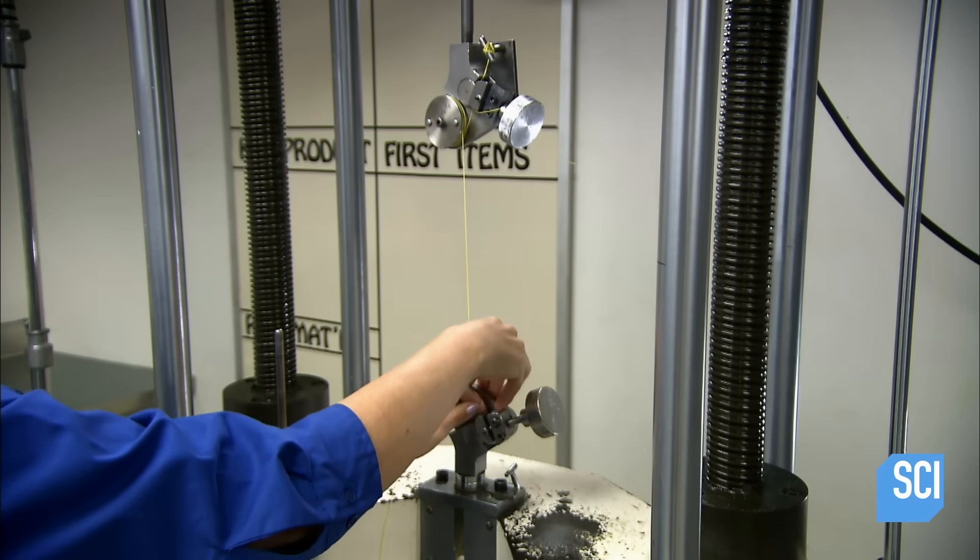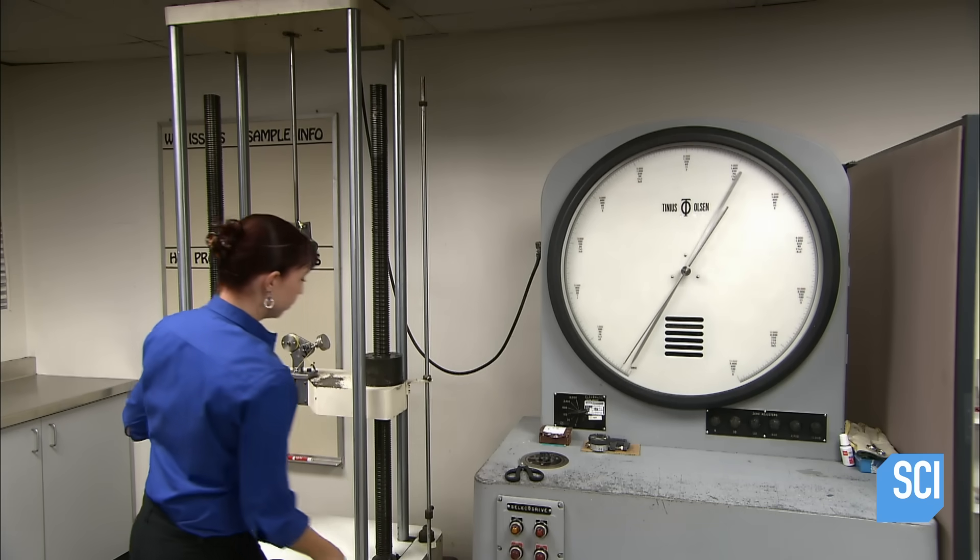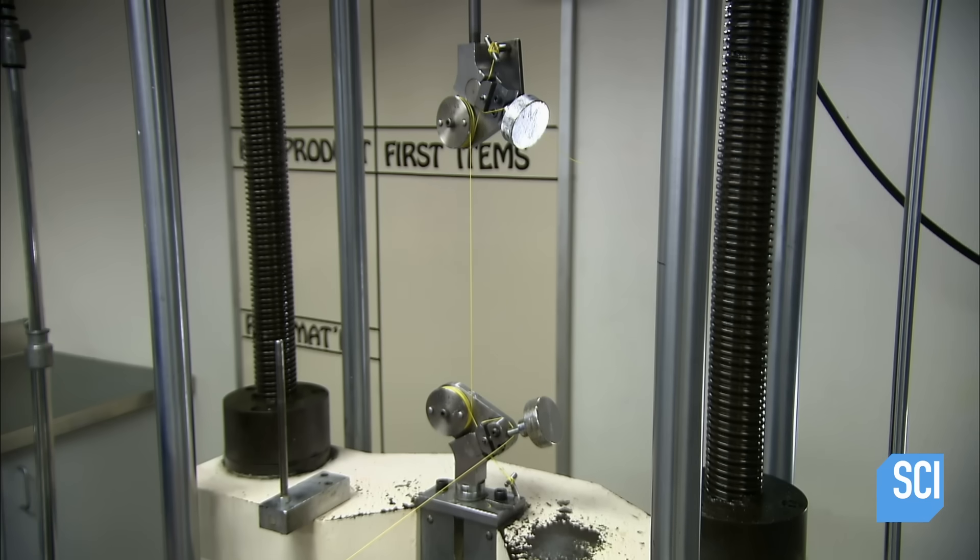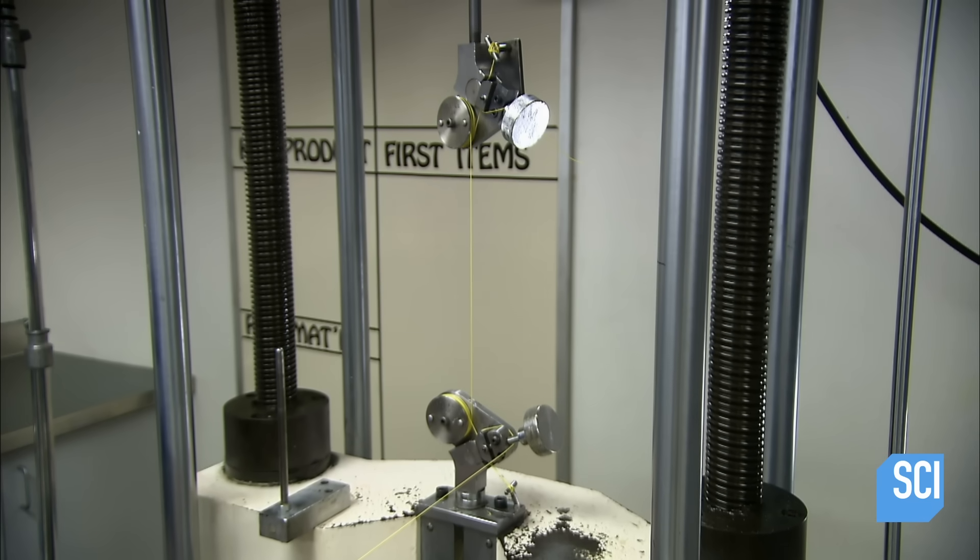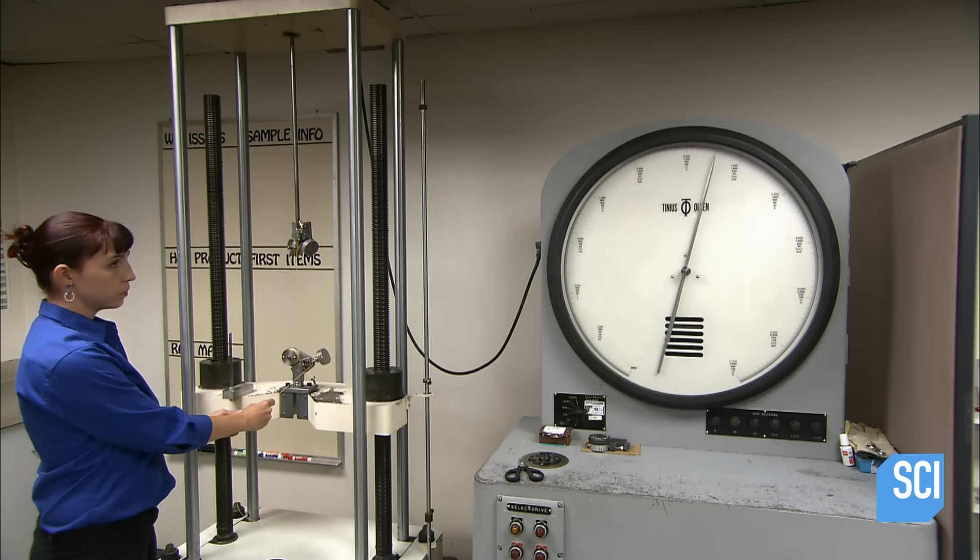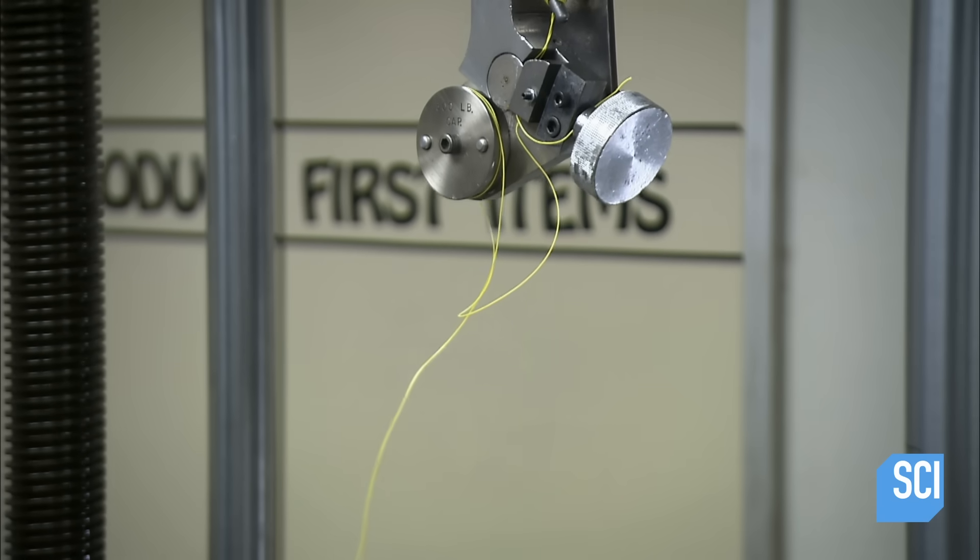Now, it's over to a test station. A technician clamps a piece of fishing line in a testing apparatus. It pulls the fishing line from both ends until it breaks. A gauge measures the line's breaking point. It snaps at 118 pounds of pressure, exceeding requirements.